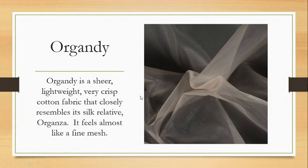Next we have organdy, which is cotton's answer to its relative organza — organza being a silk fabric. Organdy is created using an open weave with very tightly twisted, stiff yarns. It is a very crisp, very sheer fabric that feels very close to almost a fine mesh or a tulle, more than your typical cotton fabrics.